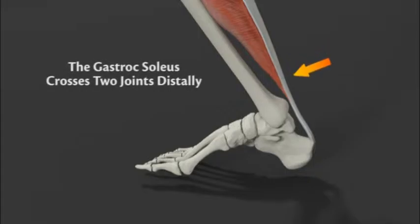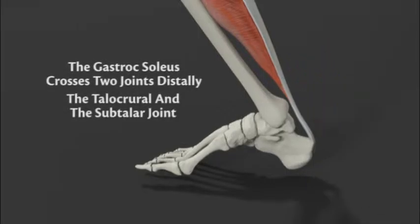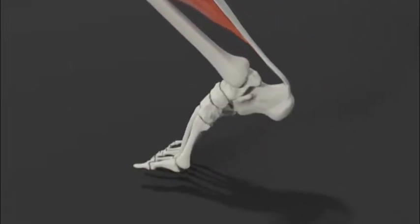The gastro soleus crosses two joints distally, the talar crural and the subtalar. If sagittal plane motion at the subtalar joint is blocked, the rear foot must rotate around the ankle axis causing propulsion.